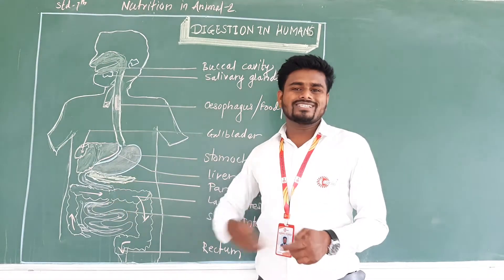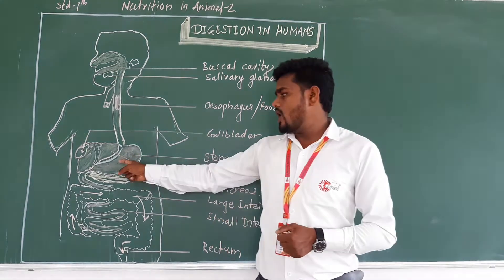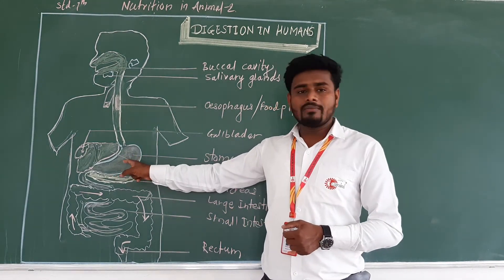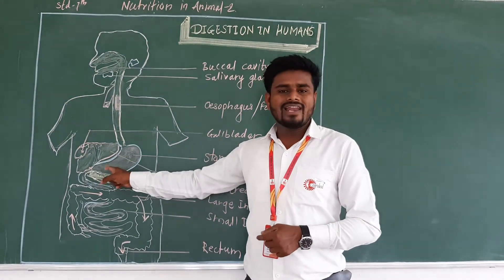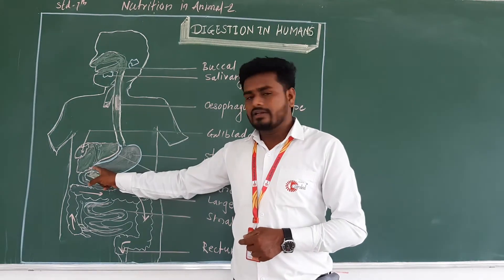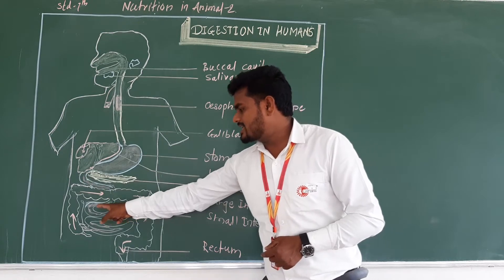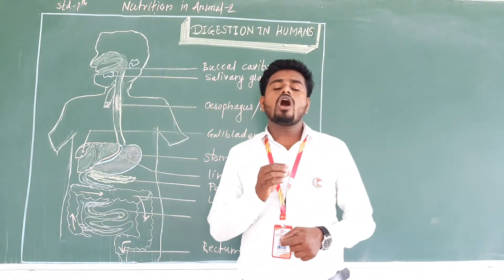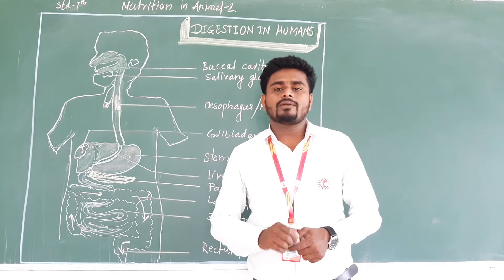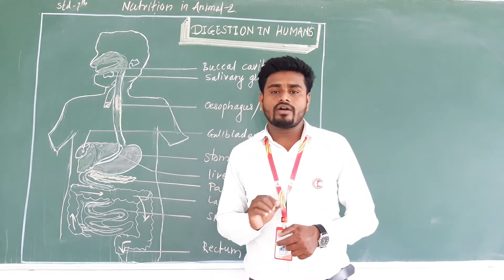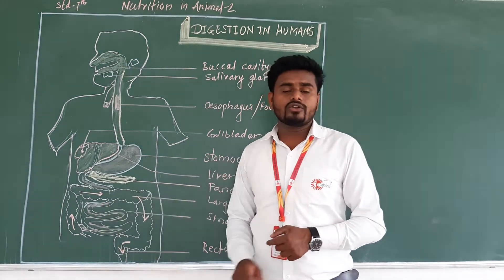The process of breakdown of food substances takes place again in the stomach through churning. After that, the food goes into the small intestine. The small intestine is a long narrow muscular tube, approximately 7.5 meters long.